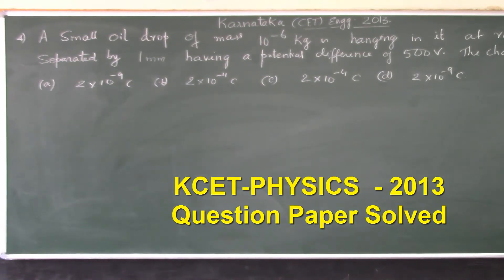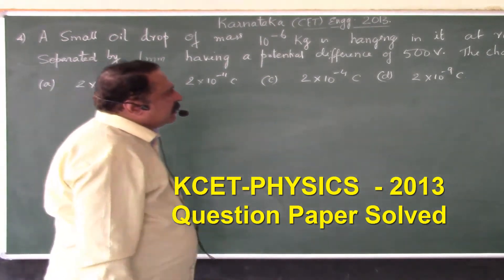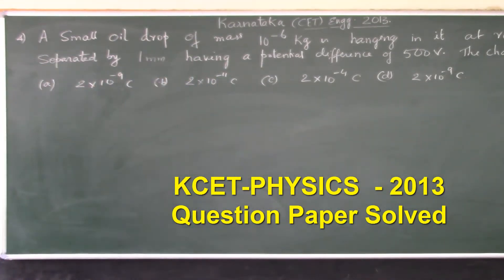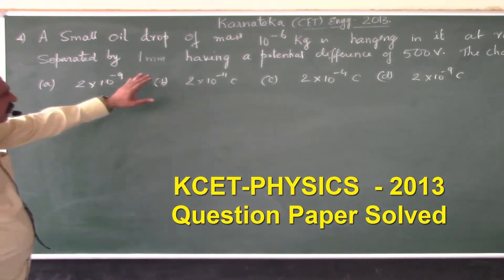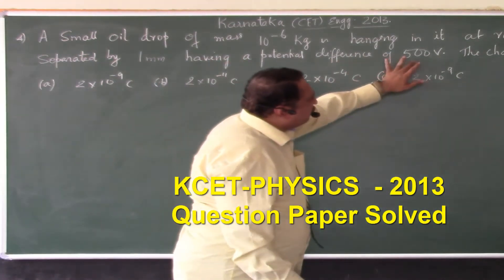The next problem: Karnataka KCET Engineering 2013 examination. A small oil drop of mass 10 to the power of minus 6 kg is hanging at rest between two plates separated by 1 millimeter having a potential difference of 500 volts.